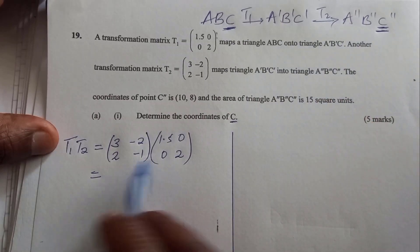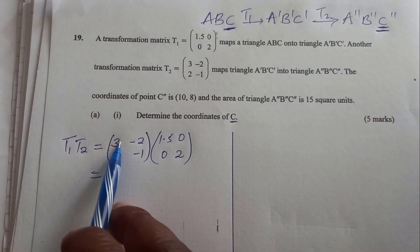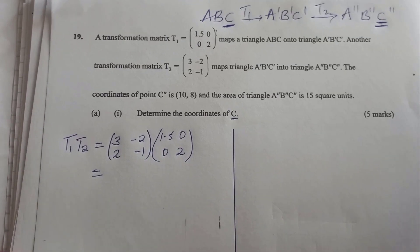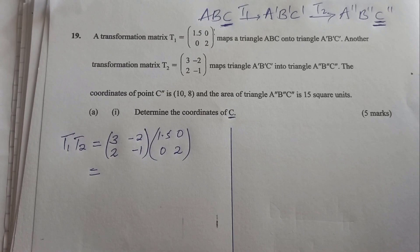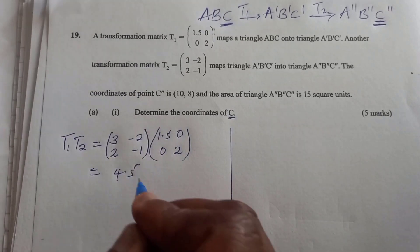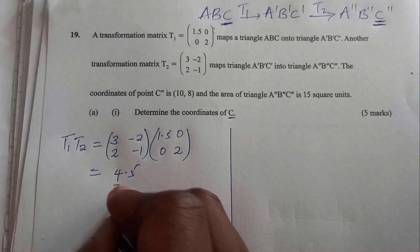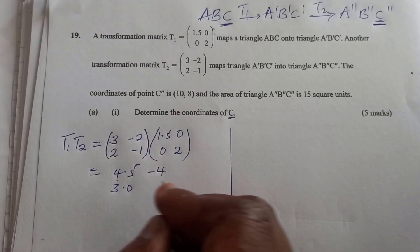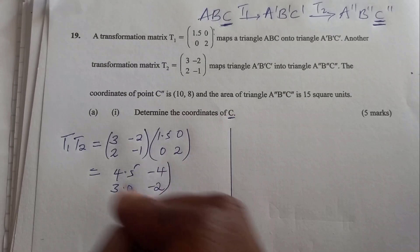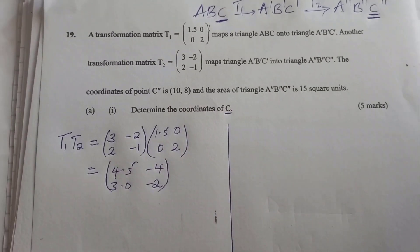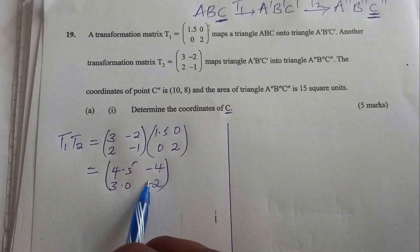When you multiply those two matrices, you get the combined transformation matrix: [4.5, -4; 3, -2].